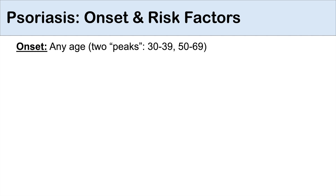The onset of psoriasis can occur at any age, but there are generally two peaks — two times in a person's life where they are at higher risk. These include between ages 30 to 39 and 50 to 69.